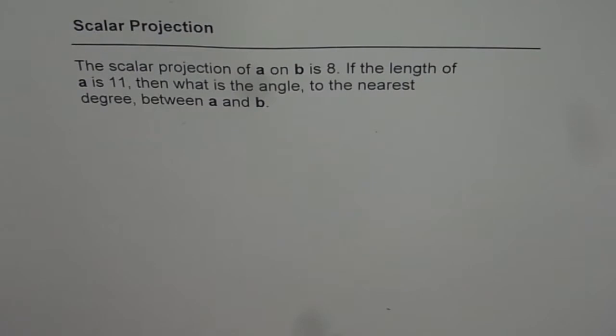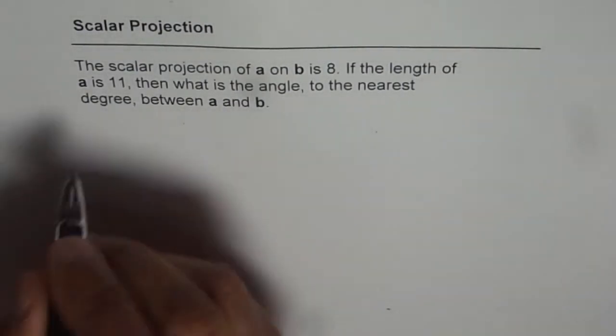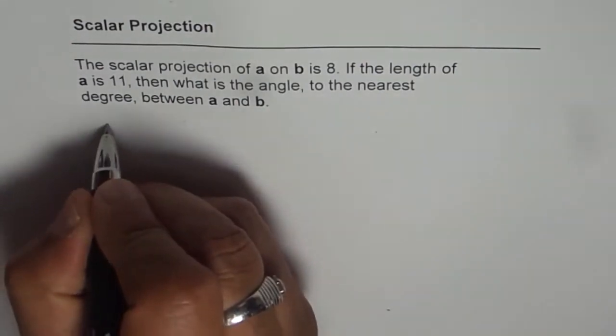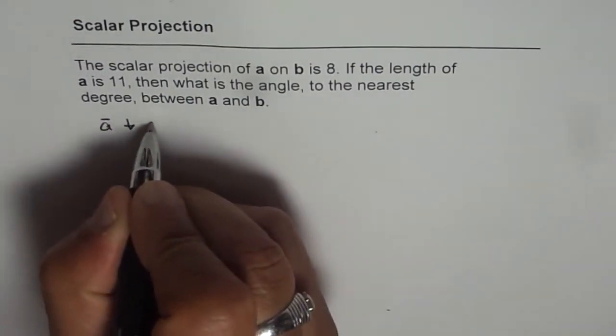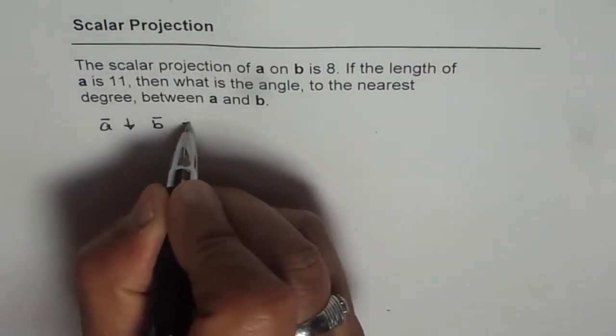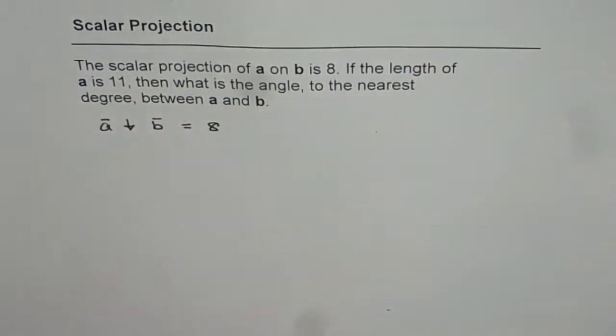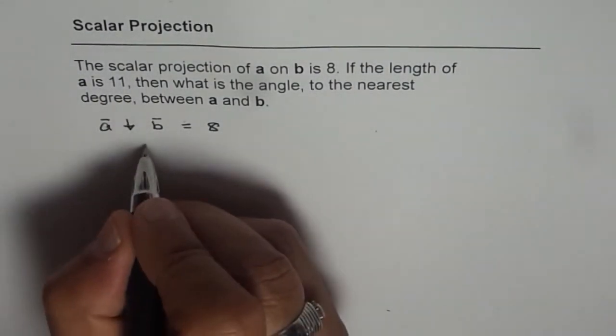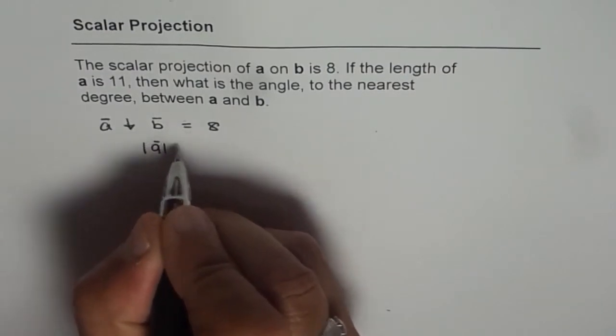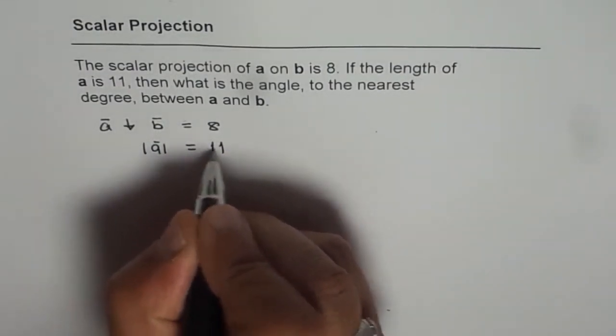So what we are given here is two vectors A and B, where scalar projection of A on B, that means we can write scalar projection as this symbol. Projection of A on B is equal to 8. So that is a scalar projection of A on B. We are also given here length of vector A. That means magnitude of A is equal to 11. So this is what we are given.